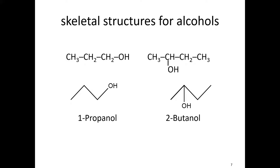We can also use skeletal structures instead of condensed structural formulas. For propanol, remember the ends are always carbons unless otherwise noted. So we have carbon one, two, three, with the OH bond at the end — this is 1-propanol. There's no carbon at the end, just the bond of O to carbon. For 2-butanol, when the OH comes in the middle, you see a line coming down — four carbons, with the OH on the second one.